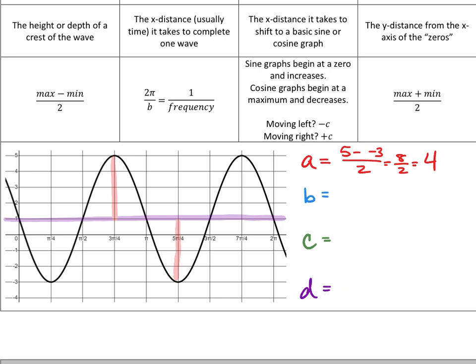In fact, let me show my work on this one to show that this also works. This would be 5 plus negative 3 divided by 2, which is 2 divided by 2, which is 1, which you saw on the graph.